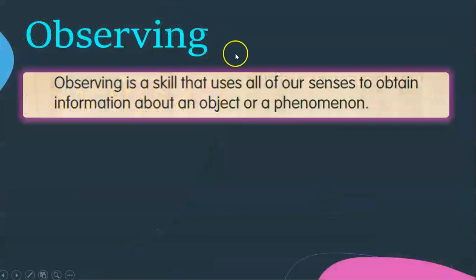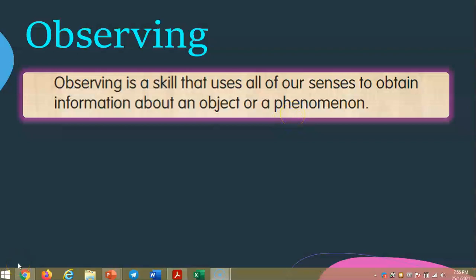First, let's look at observing. You have learnt about observing since you are level 1. Observing is a skill that uses all of our senses to obtain information about an object or a phenomenon. Okay class, what are the five senses that we have?